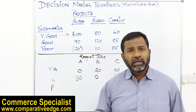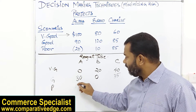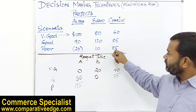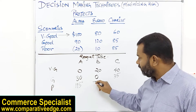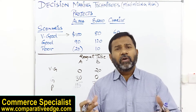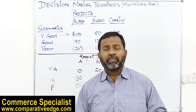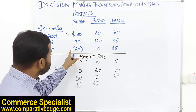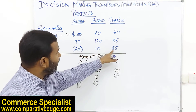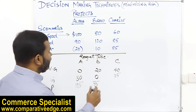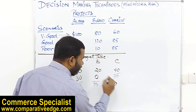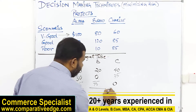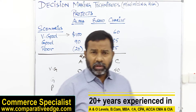In the 'Poor' economy row, the maximum return among Alpha, Bravo, and Charlie is $85 from Charlie. If I choose Alpha, I have a regret of $115. If I choose Bravo at $10, I have a regret of $75 — that is the additional profit I could have earned but didn't because of a wrong decision. If I choose Charlie at $85, I have no regret whatsoever.